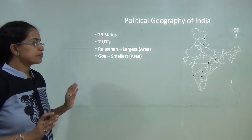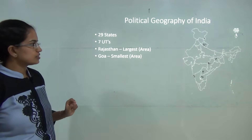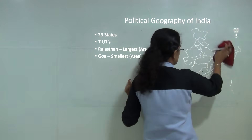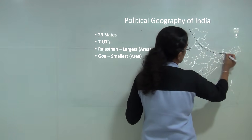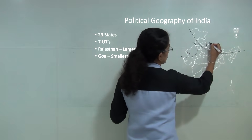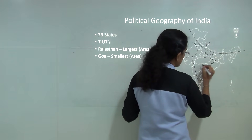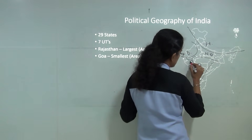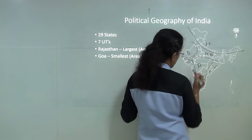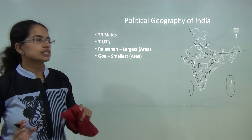When understanding the physical divisions of India, there are broadly six divisions: first, the Himalayan region; second, the Great Indian Desert; third, the Northern Plains; fourth, the Peninsular region; fifth, the Coastal Plains; and sixth, the Island groups. These six form the major physical divisions of India.